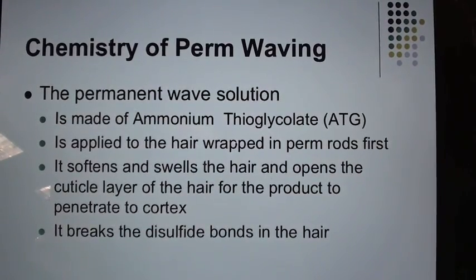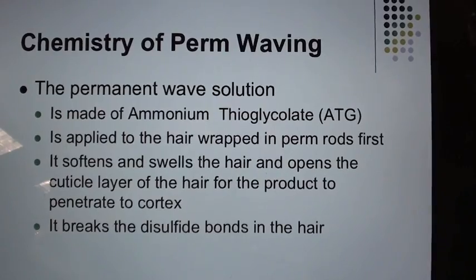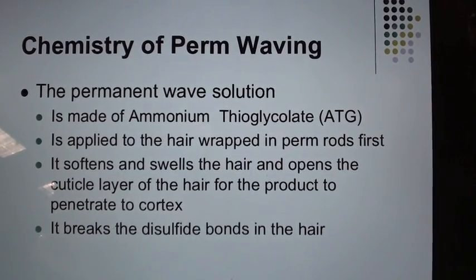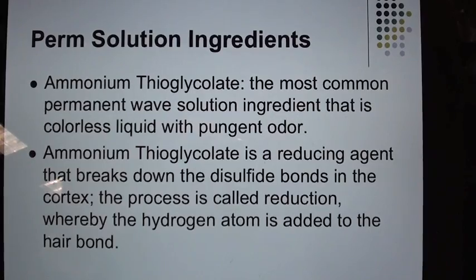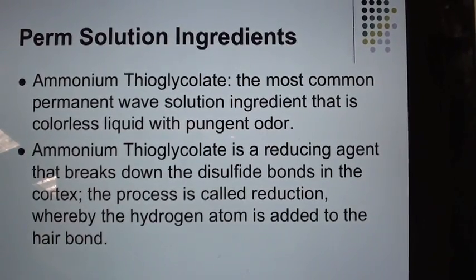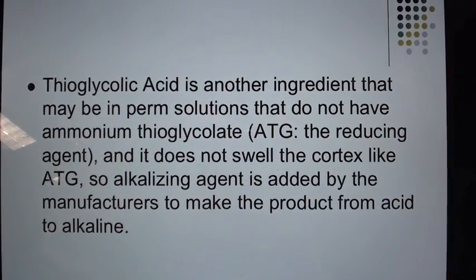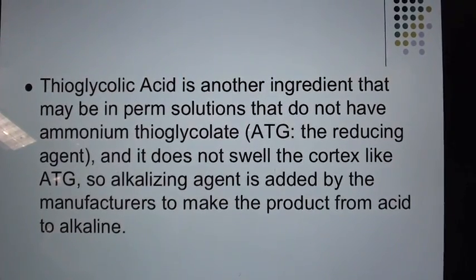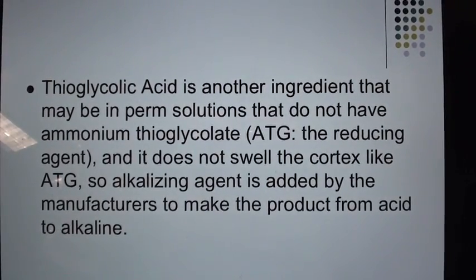Chemistry of perm waving: The permanent wave solution is made of ammonium thioglycolate (ATG). It is applied to hair wrapped on perm rods first, softening and swelling the hair and opening the cuticle for the product to penetrate the cortex, then breaking the disulfide bonds. Ammonium thioglycolate is a colorless liquid with a pungent odor and a reducing agent — it breaks disulfide bonds through reduction, whereby a hydrogen atom is added to the hair bond. Dioglycolic acid is another ingredient in some perm solutions without ATG; it does not swell the cortex like ATG, so an alkalizing agent is added by manufacturers to make the product alkaline.